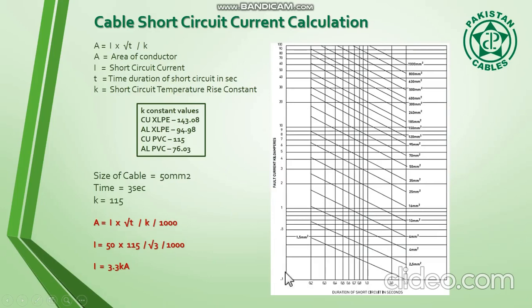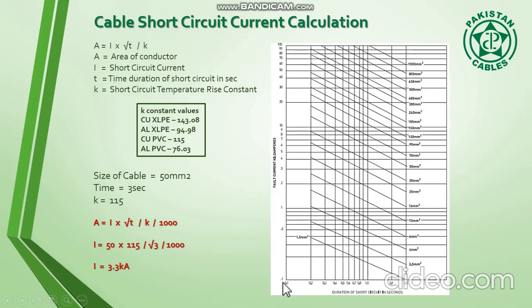Here we are using the copper PVC chart. On the x-axis you can see the duration of short circuit in seconds, starting from 0.1 seconds going up to 3 seconds. On the y-axis, the fault current in kilo amperes starts from 0.1.